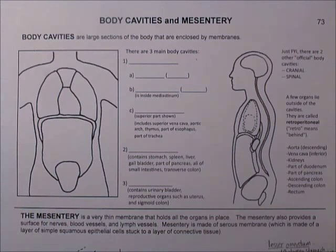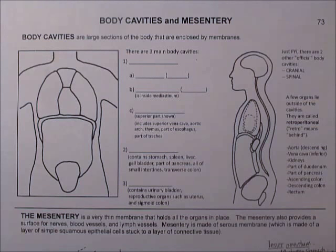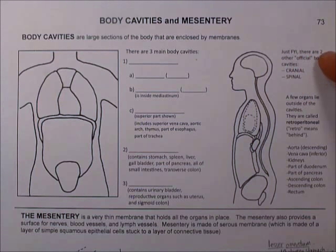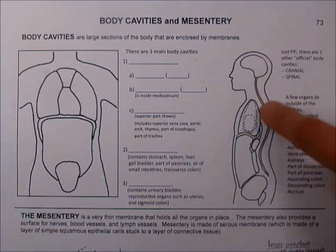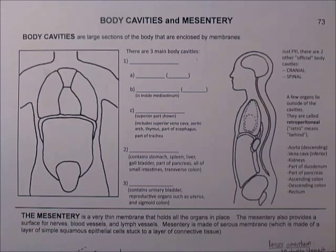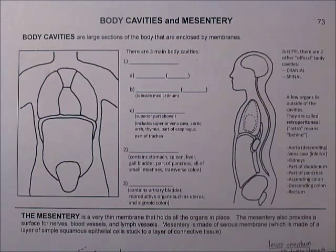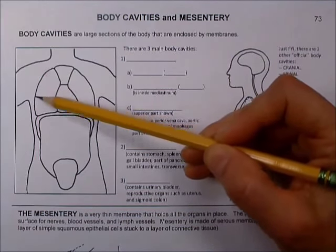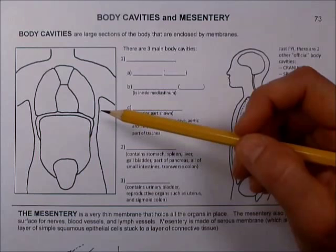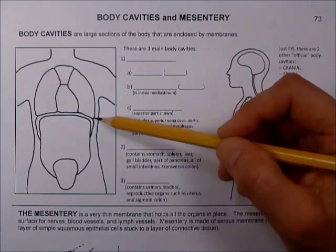There are three main body cavities in the torso. The official list includes five total — I've put two others here just FYI — so the actual official list is one, two, three, four, five. But in the torso, which means the main section — not the head or arms or legs — there are three main cavities. We've already had these words; we haven't officially introduced them as body cavity names, but we've been using them.